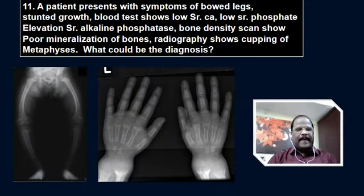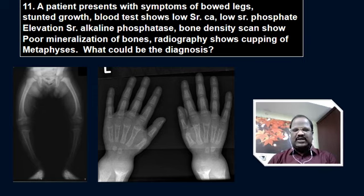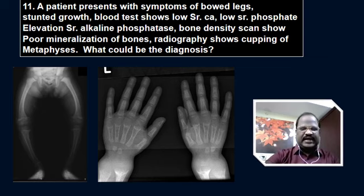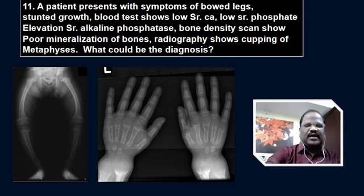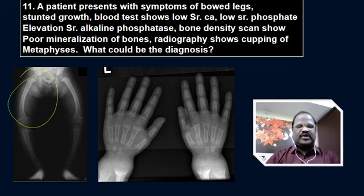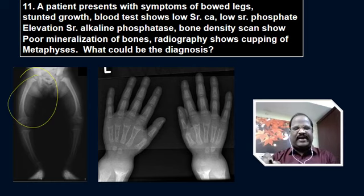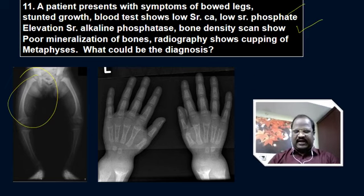Question number 11: a patient presenting with bowed legs, stunted growth; blood test shows low serum calcium, low serum phosphate, and elevated level of serum alkaline phosphatase. Bone density scan shows poor mineralization of bones. Radiography shows cupping of metaphysis. These are typical clinical symptoms and findings indicating the diagnosis of rickets.